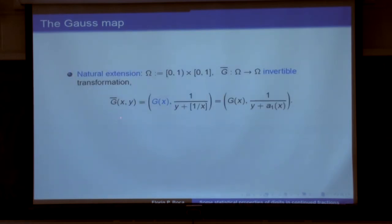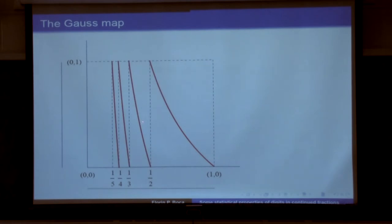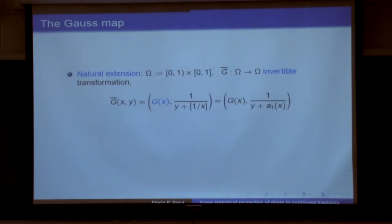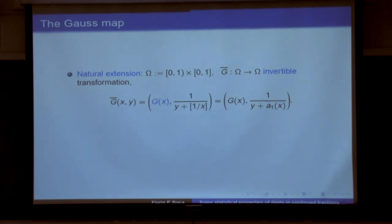This is the graph of the Gauss map — a friendly, piecewise differentiable object. To the Gauss map, one can associate the so-called natural extension. The Gauss map is not invertible — that's obvious since it is not one-to-one. So we like to dilate it to an invertible map, because in ergodic theory it is more convenient to work with invertible transformations rather than non-invertible ones.